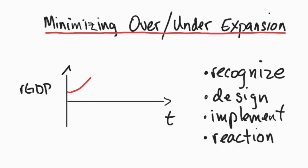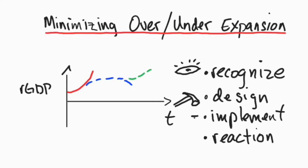Ensuring that an economy grows at an appropriate rate, given the chance of shocks to the system, requires excellent forecasting to enable monetary authorities to tune their policy as well as possible. However, there are substantial problems: potential problems must first be recognized, then appropriate action designed and implemented, and patience is required as monetary policy can take over a year for its results to become apparent. In other words, a certain amount of luck is required to achieve perfect results.